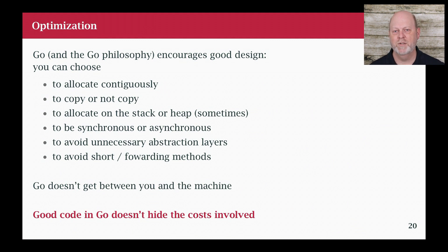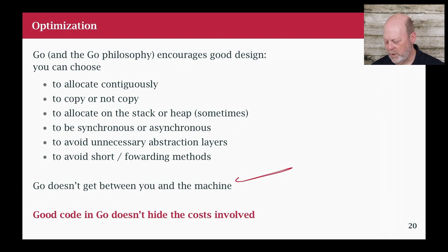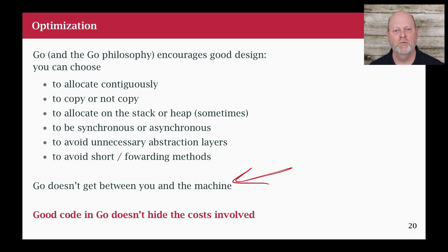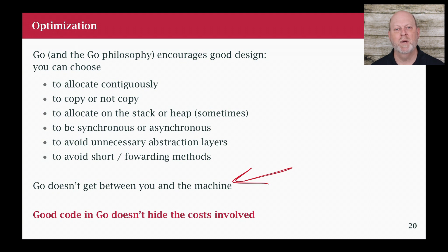To finish with some thoughts on optimization — first, how does this relate to Go? The nice thing about Go is it gives you lots of choices and allows you to actually do mechanical sympathy, because it doesn't get between you and the machine. The other idea is about not hiding costs. The Go language itself tries to avoid hiding the cost of operations from you, and good Go code ideally will also not hide the costs from the people who read your code. We want to make the logic explicit and the costs explicit, so we can see them and think about them.